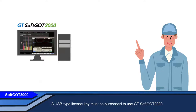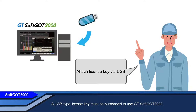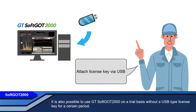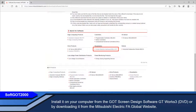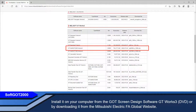A USB type license key must be purchased to use GT-SOFT GOT2000. It is also possible to use GT-SOFT GOT2000 on a trial basis without a USB type license key for a certain period. Install it on your computer from the GOT Screen Design Software GT-Works 3, or by downloading it from the Mitsubishi Electric FA Global website.